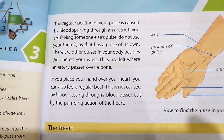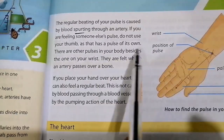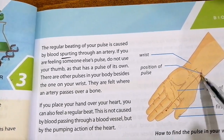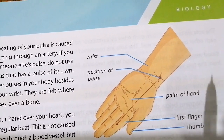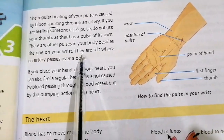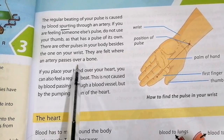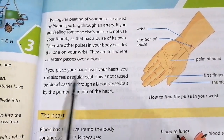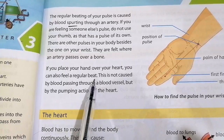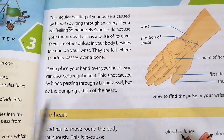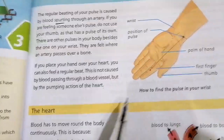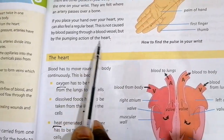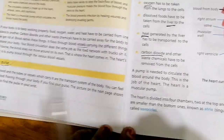You cannot use your thumb, but with your fingers you can feel how the blood is flowing. There are other pulses in our body besides the one on your wrist. They are felt where an artery passes over a bone. If you place your hand over your heart, you can also feel a regular beat. This is not caused by blood passing through a blood vessel, but by the pumping action of the heart. If we place our hand on our heart, we can feel it continuously pumping. This is all about the pulse.